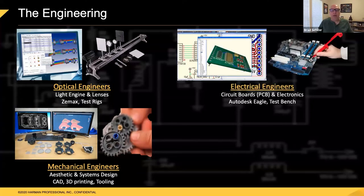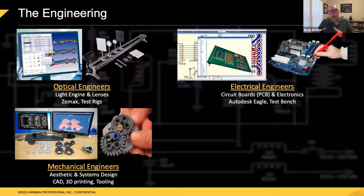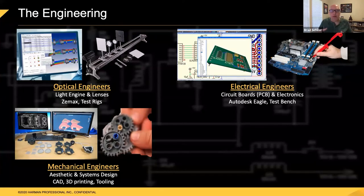Electrical engineers work on the actual circuit boards. Everyone knows we need motors to move the lenses and pan and tilt, logic boards to control things, and sensors. Electrical engineers design the circuit boards using programs such as Autodesk Eagle, then have them made either in their own factory or sent out to a PCB house. Once the PCBs come back, they have to test each different electronic component to make sure everything is working before the boards are put into a mechanical light.